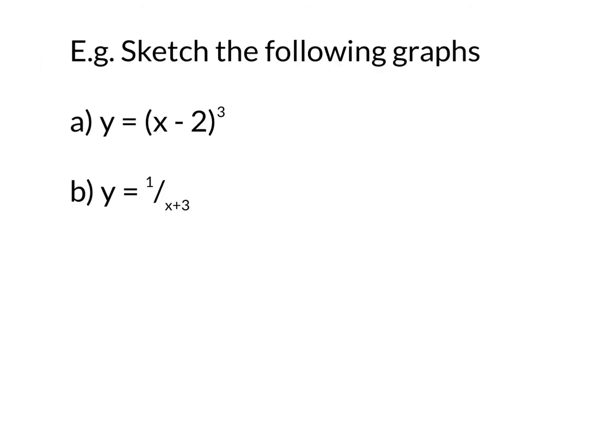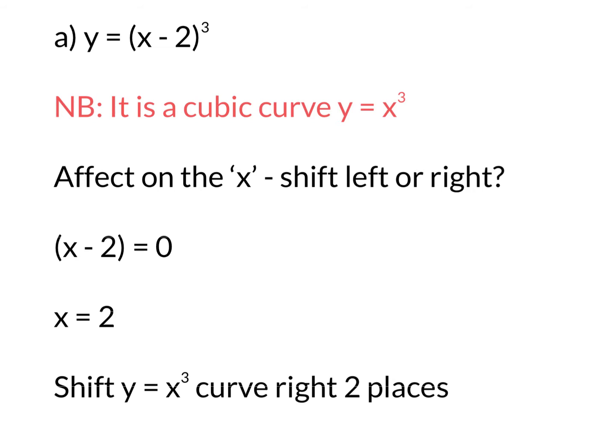Let's have a look at some examples. The first one is y equals x minus 2 cubed; the second is y equals 1 over x plus 3. The first thing you need to recognise is what the original graph was — cubic, hyperbola, exponential, or even a parabola. So y equals x minus 2 cubed is a cubic curve. To work out the shift, we let x minus 2 equal to 0, so x equals 2. We're going to shift that cubic curve two places to the right.